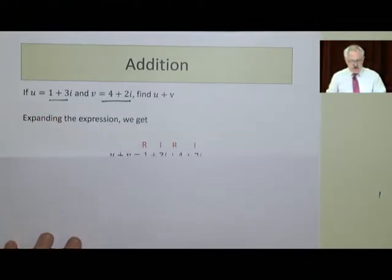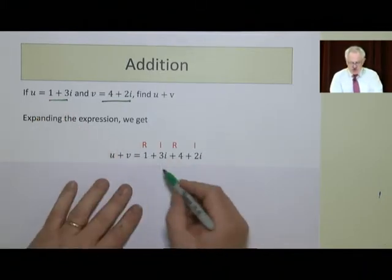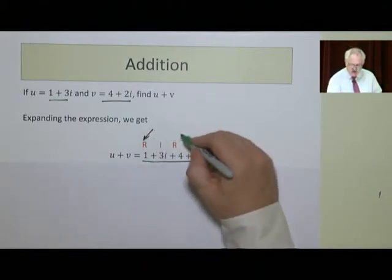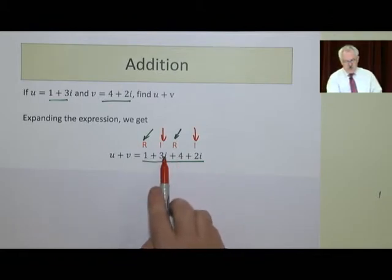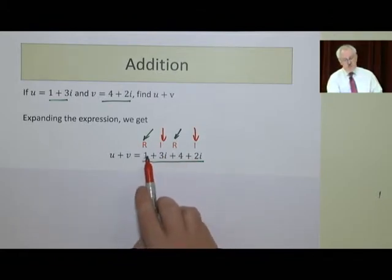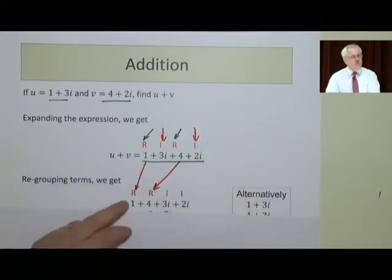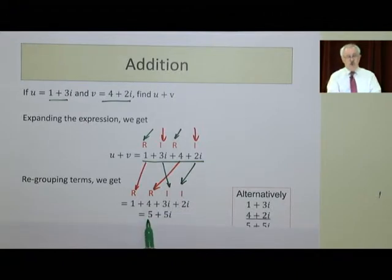So what we do is we expand the expression. We write 1 plus 3i, 4 plus 2i, and we decide to group them, not in terms of apples and oranges, but in terms of real numbers and the imaginary component. So I'm now going to rearrange them. The 1 and the 4 are real, so I'm grouping those here. Whereas the imaginary ones are 3i and 2i. So I just grouped the two together. 1 plus 4 is 5, and 3i plus 2i is 5i.